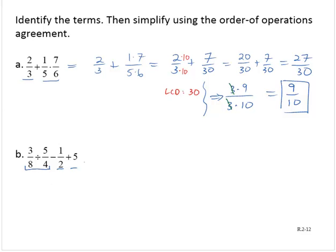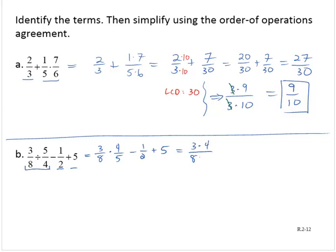Rewriting that division as multiplication by the reciprocal, I'd have 3 eighths times 4 fifths, subtract 1 half, add 5. That would give me 3 times 4 over 8 times 5, minus 1 half plus 5.